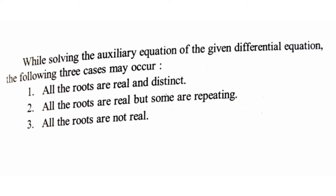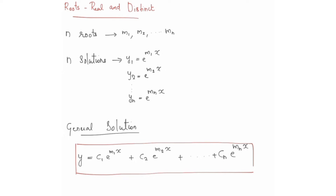That's one case: all the routes are real repeating. Case two: distinct routes. Now, if we look at the real and distinct roots, we can find the general solution. If we find the auxiliary equation, we find the roots.